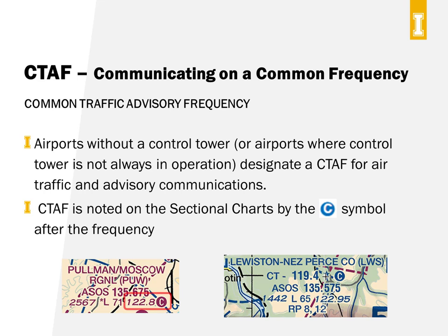For example, at the Moscow Pullman Airport the CTAF is 122.8 megahertz. In Lewiston, it's 119.4. It needs to be different because these two airports are close enough together that you could get traffic for both airports over the same frequency and it would get confusing.